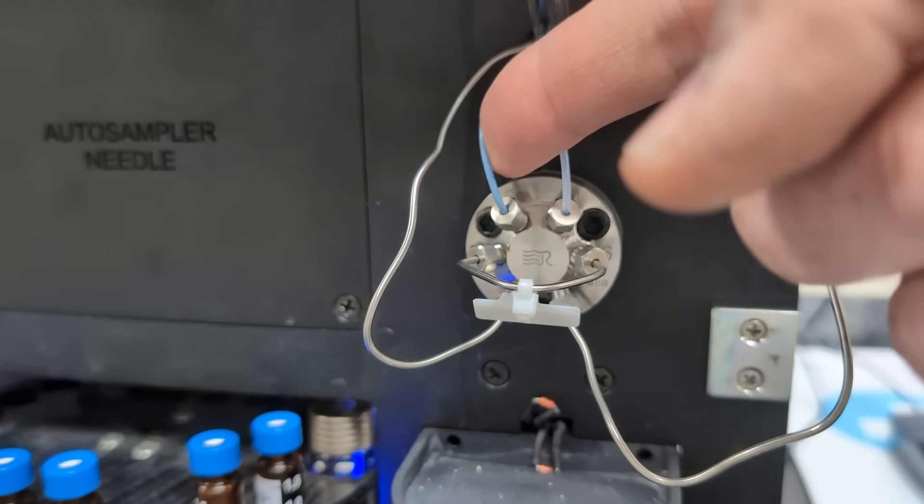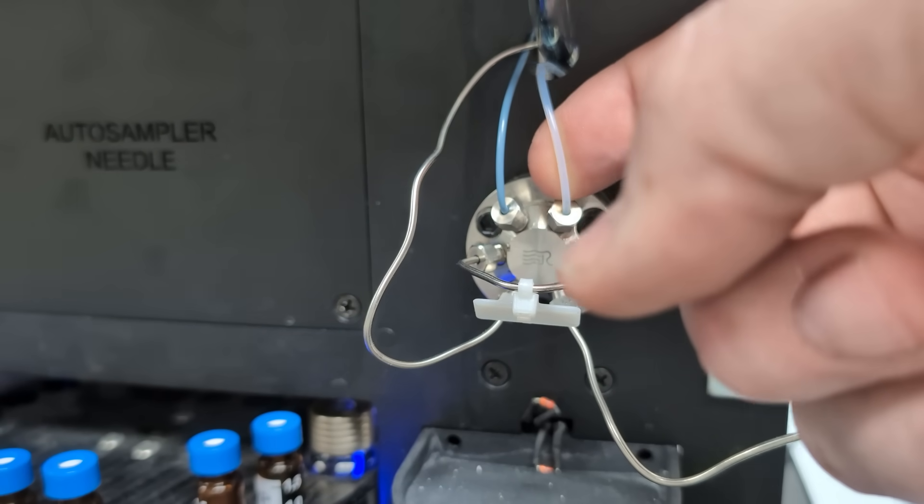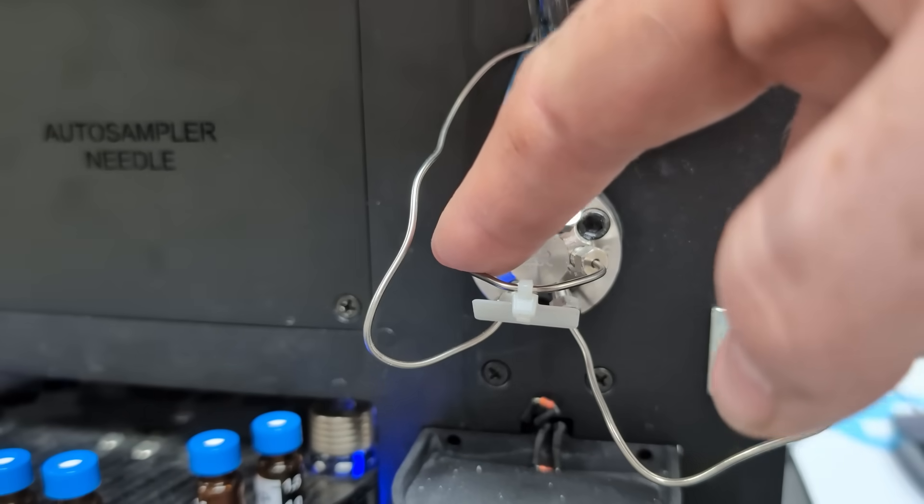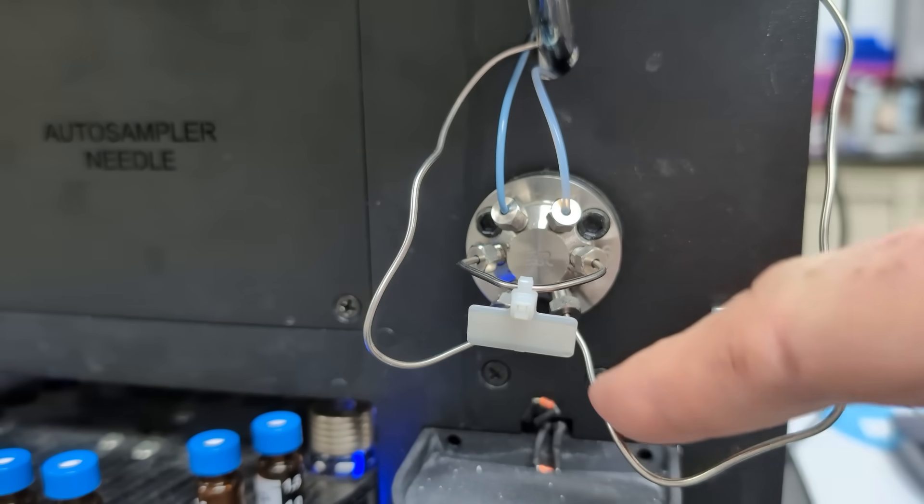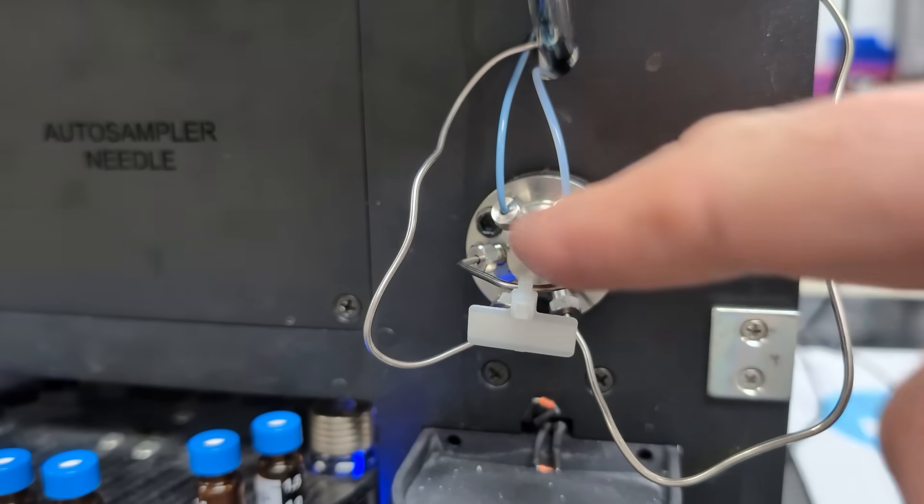Then the pump connects to our sample loop, comes through our sample loop and down here, and up into our column oven, through our column, and into our detector.